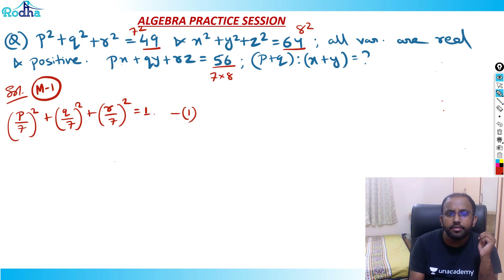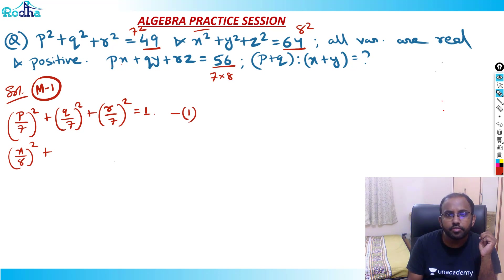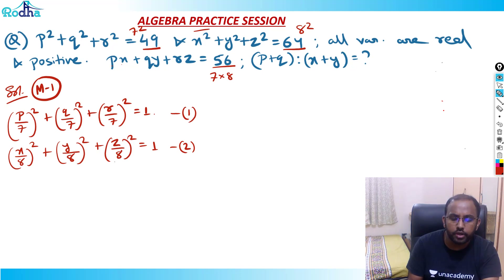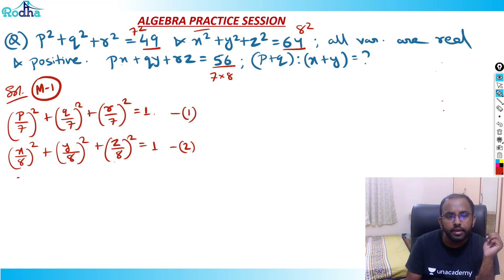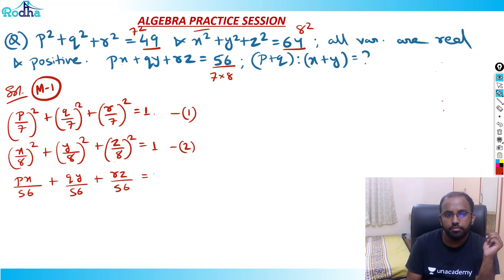Similarly, if I divide the second equation by 64, I can write (X/8)² + (Y/8)² + (Z/8)² = 1. This is equation number 2. And I can write the third equation as PX/56 + QY/56 + RZ/56 = 1. This is equation number 3.